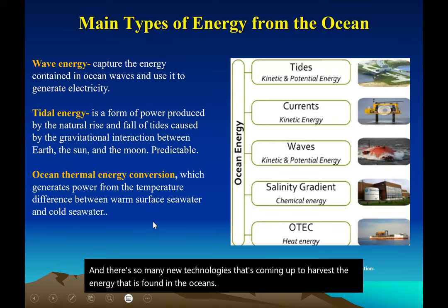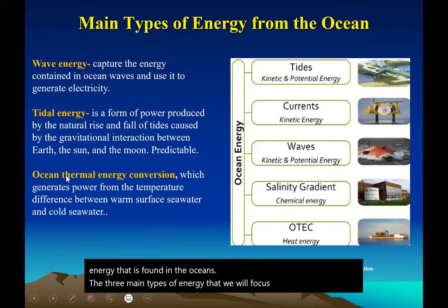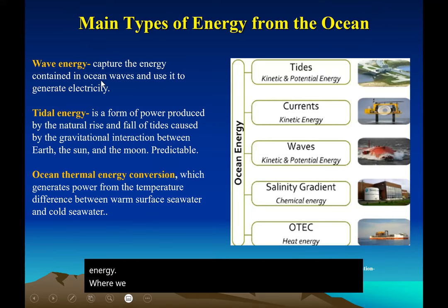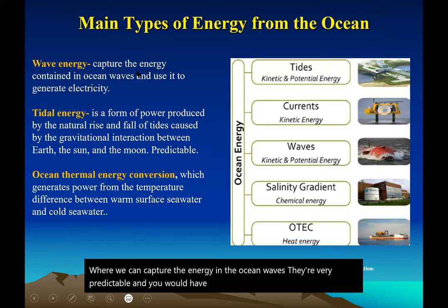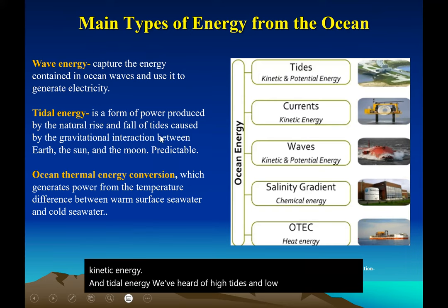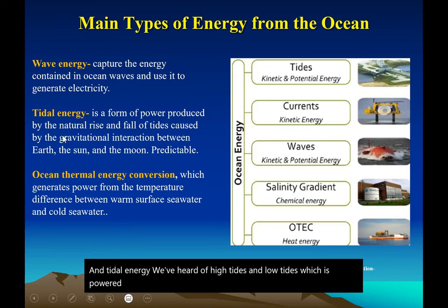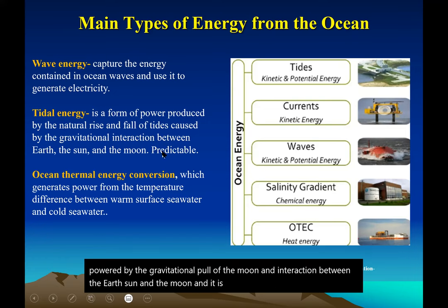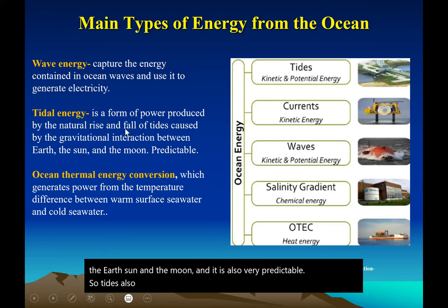The three main types of energy we will focus on are: wave energy, where we capture the energy in ocean waves — they are very predictable, constant, and a source of potential and kinetic energy; and tidal energy, powered by the gravitational pull of the moon and the interaction between the Earth, sun, and moon. Tidal energy is also very predictable, and tides also fall under the category of kinetic and potential energy.